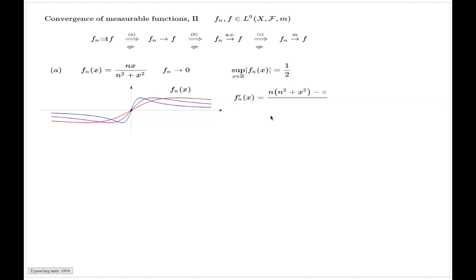This supremum will be computed in a regular form. We just compute the derivative for the function, which is this one. If you equate this derivative to zero, you will have this solution. So the supremum of this function is attained at these two points. If you plug these points in here, you will have one half. That's why you don't have uniform convergence, although you have pointwise convergence.